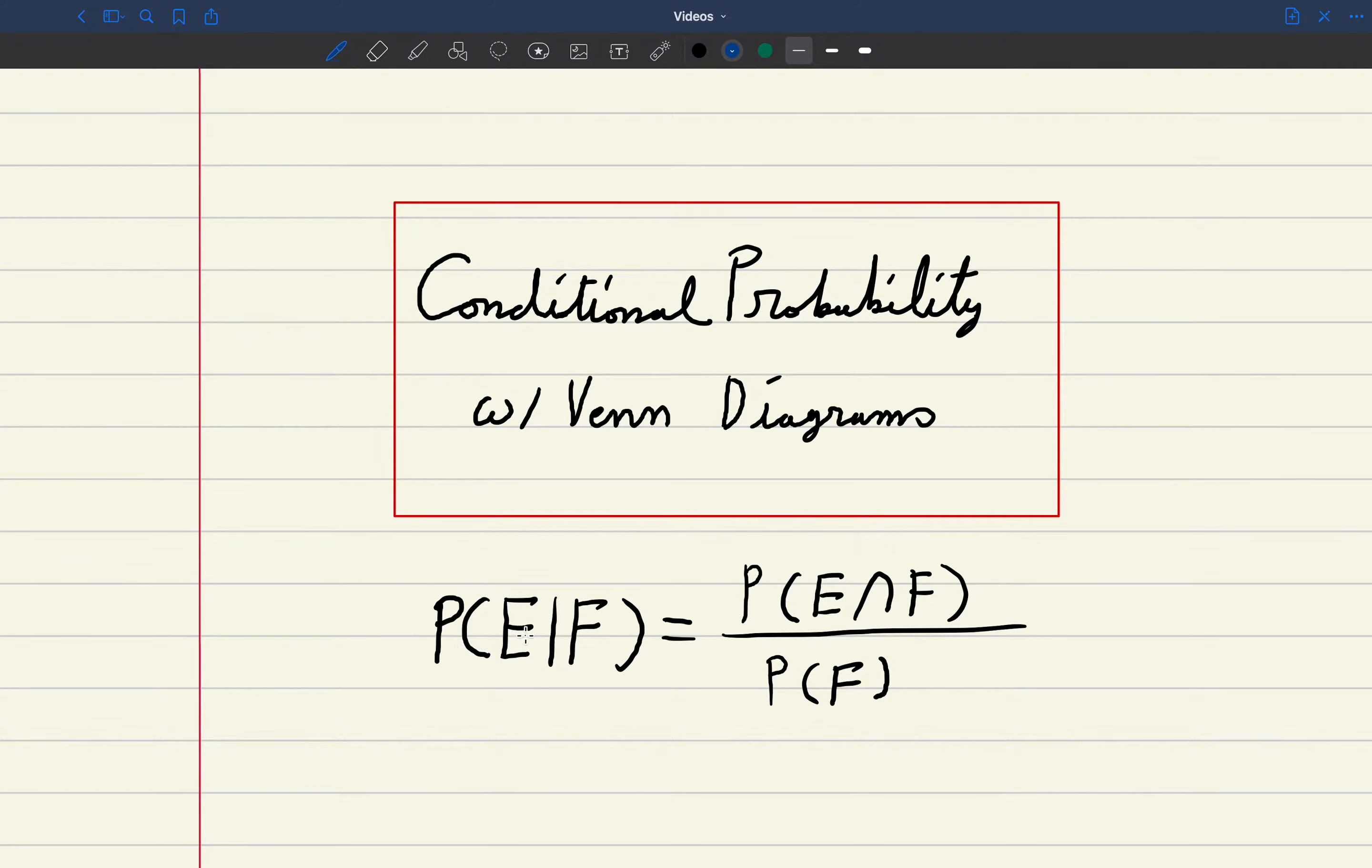Now here's the formula. The probability of event E given F has occurred will equal the probability of E and F occurring divided by the probability of F occurring.